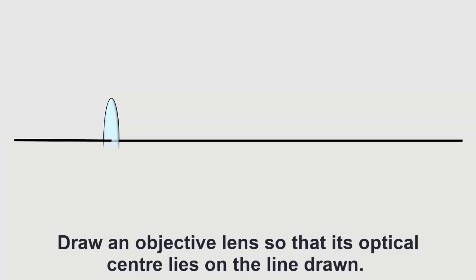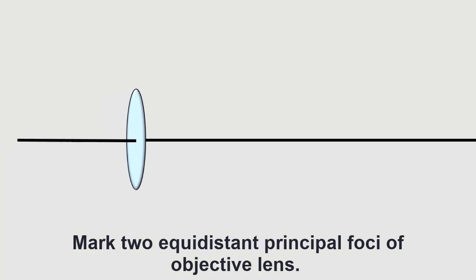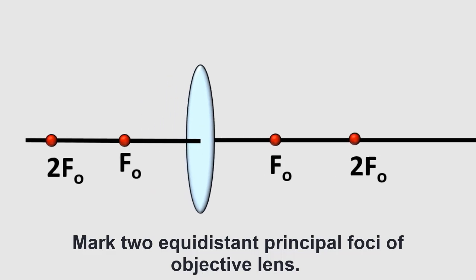Draw an objective lens so that its optical center lies on the line drawn. Mark two equidistant principal foci of the objective lens.